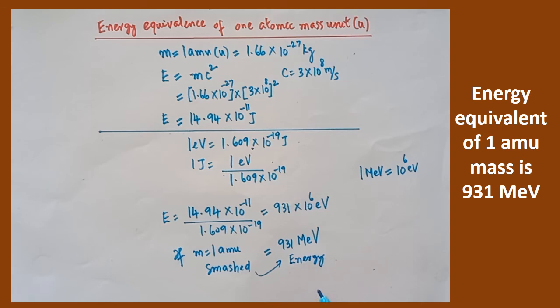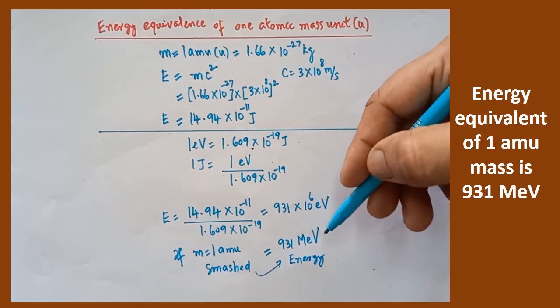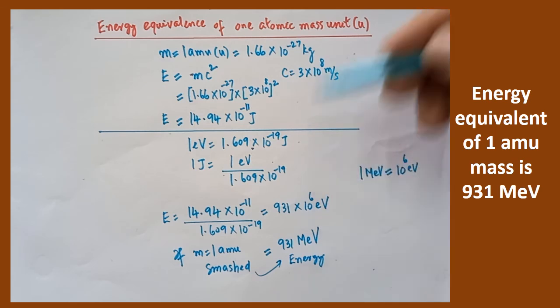This conversion is very much important because in nuclear fission reaction, the difference in mass between the product and the reactant that is converted into energy. Wherever mass is converted into energy, this conversion is very important, especially in nuclear physics.